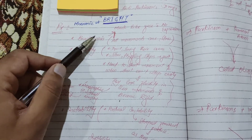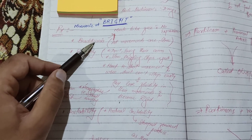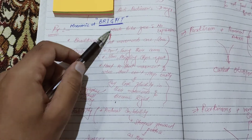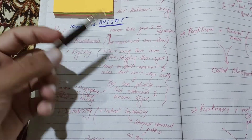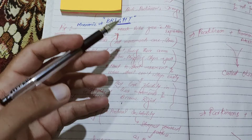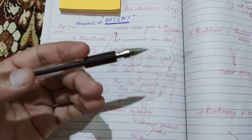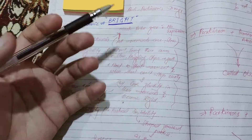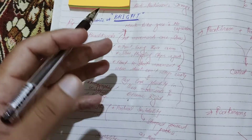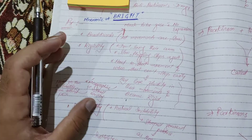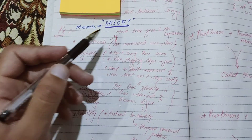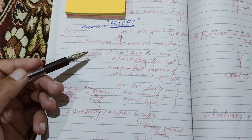Because of bradykinesia, patients find it very hard to initiate movement. Their facial muscles don't initiate movement well — unlike a normal person who moves their facial muscles to express various emotions, these patients cannot do that. As a result, they have mask-like faces.